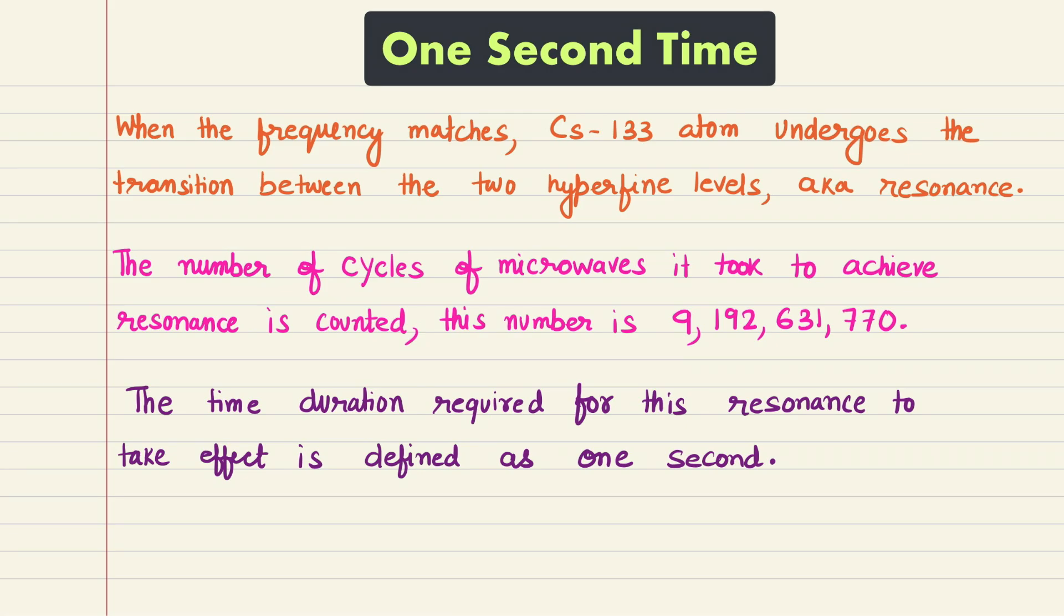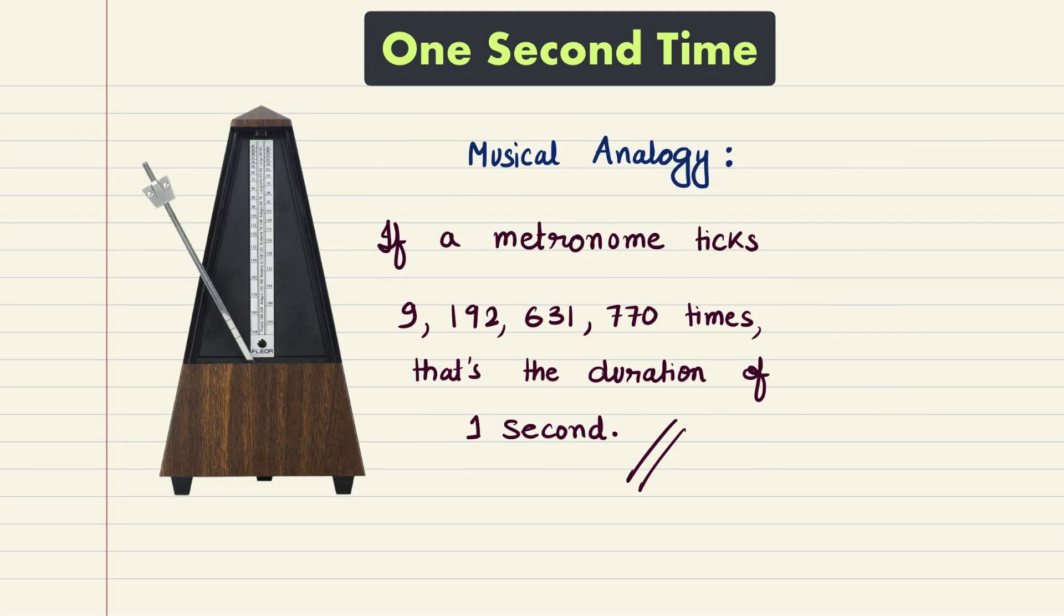Visualizing it from a musical analogy point of view, if a metronome ticks 9,192,631,770 times, that's the duration of a second. Bear in mind that this is just an analogy and not a true example of one second. Here, the total number of strikes of the metronome denotes the number of radiations emanating from the atom of Cs-133.